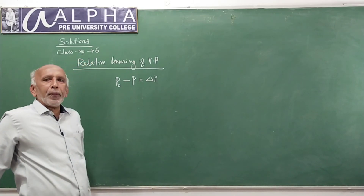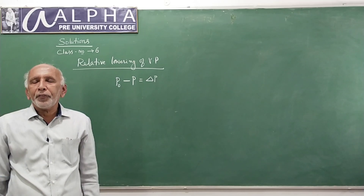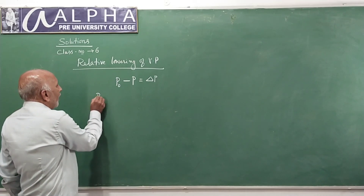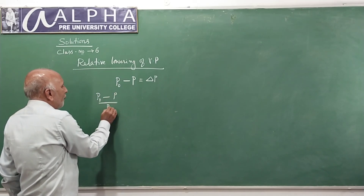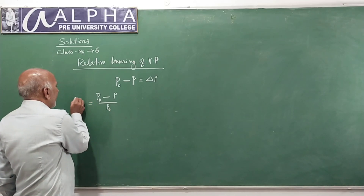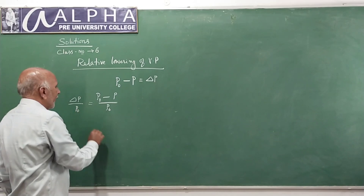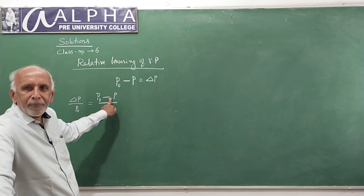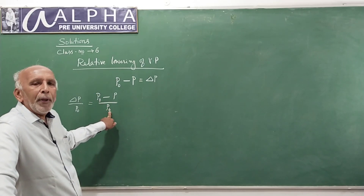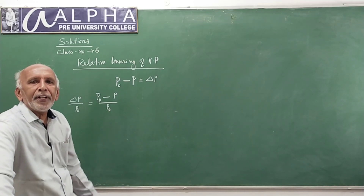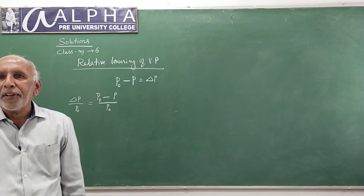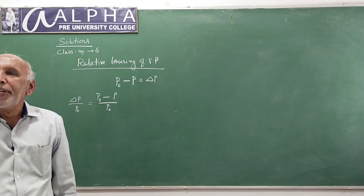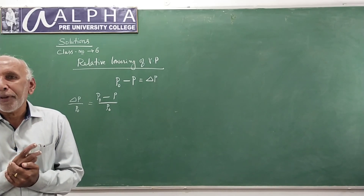Delta P is the lowering of vapor pressure of solvent. The ratio P0 minus P over P0, or delta P over P0, is known as relative lowering of vapor pressure.